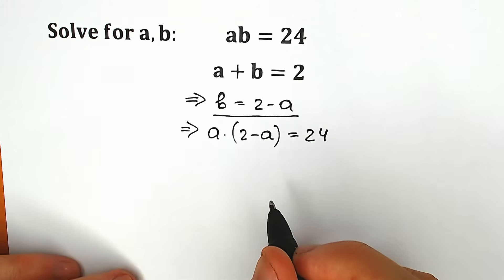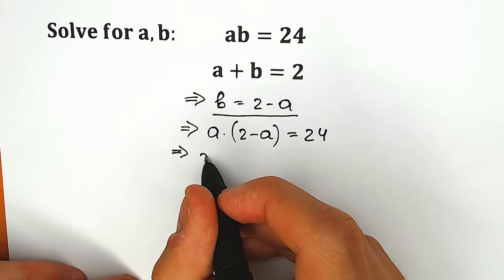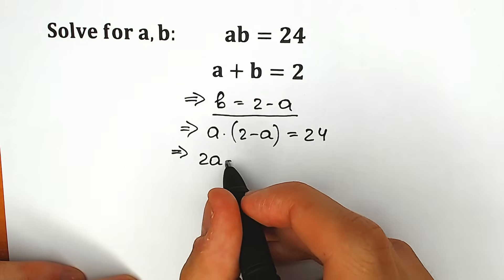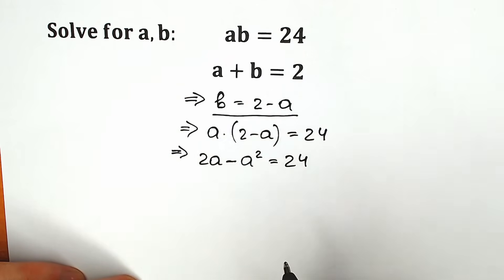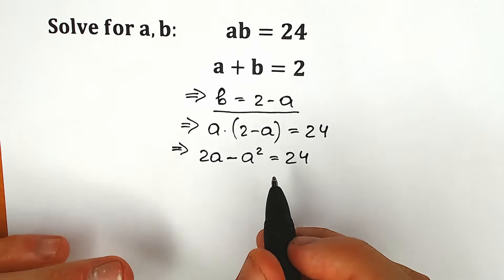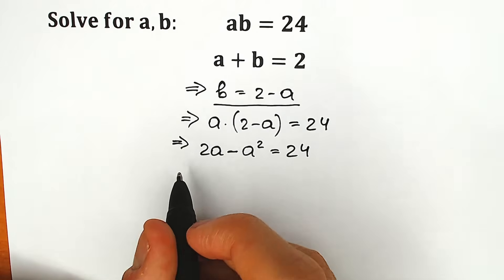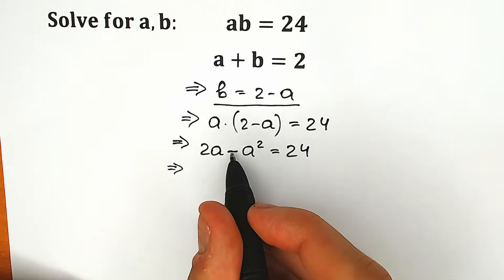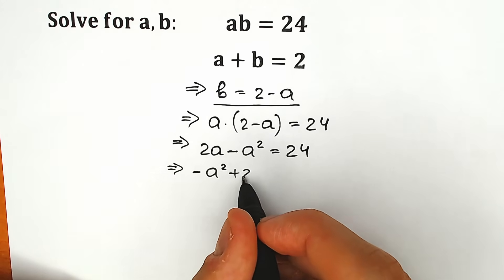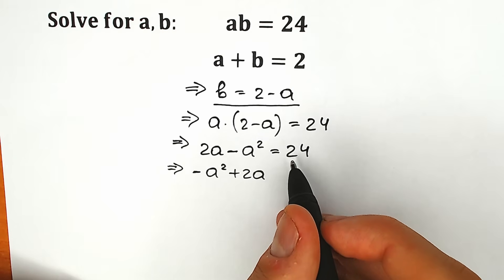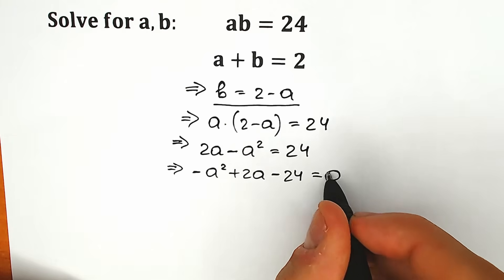Right now let's simplify this equation. We can easily multiply a by the parentheses. As a result we have 2a minus a squared equal to 24. It looks like a quadratic equation — we have a squared, we have a, we have a constant. Let's write minus a squared on the first position: minus a squared plus 2a, and we subtract 24 from both sides, giving minus 24 on the left side equal to zero.